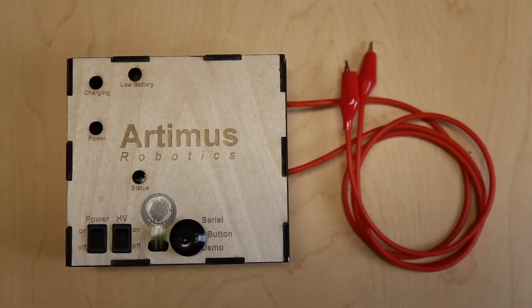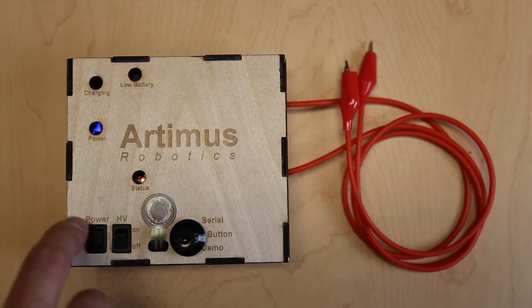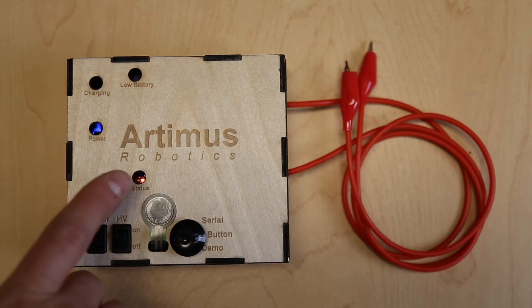To begin to use the power supply, first turn on the power switch to the control circuit. Once engaged, you will see both the power light and status light illuminate.